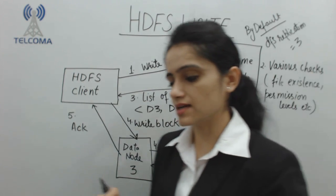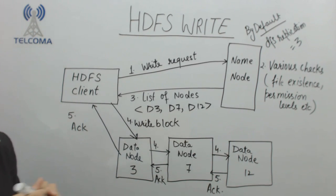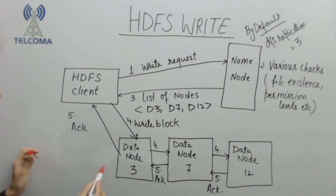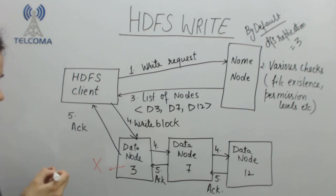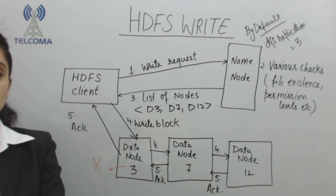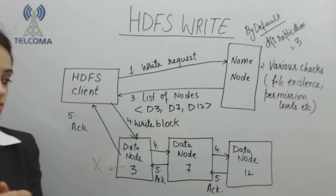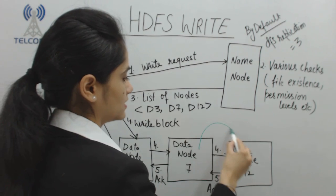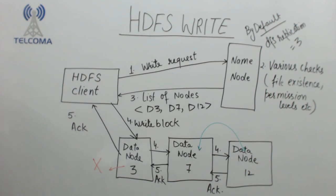What happens in case of a data node failure? If a data node fails, we still have multiple copies of the data stored on data node 7 and data node 12. This is why we require replications of the data — to serve as a backup.